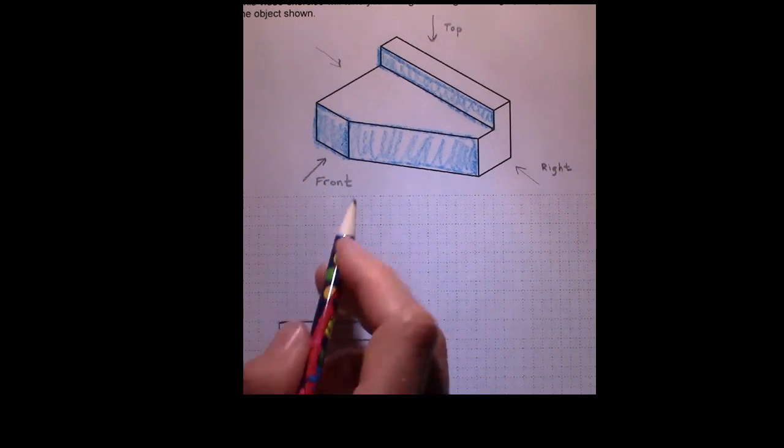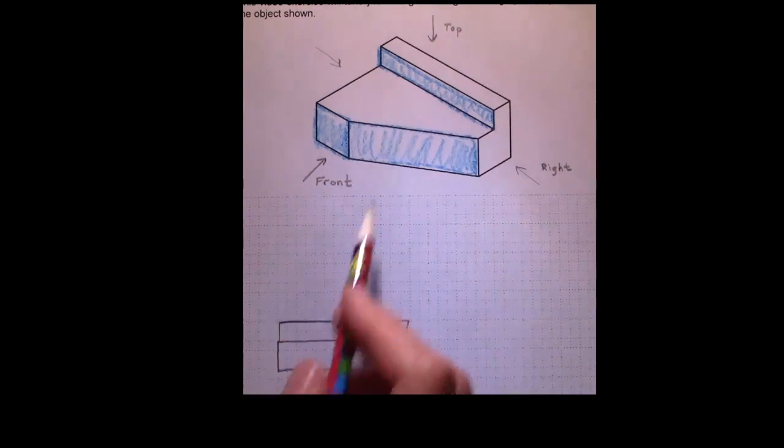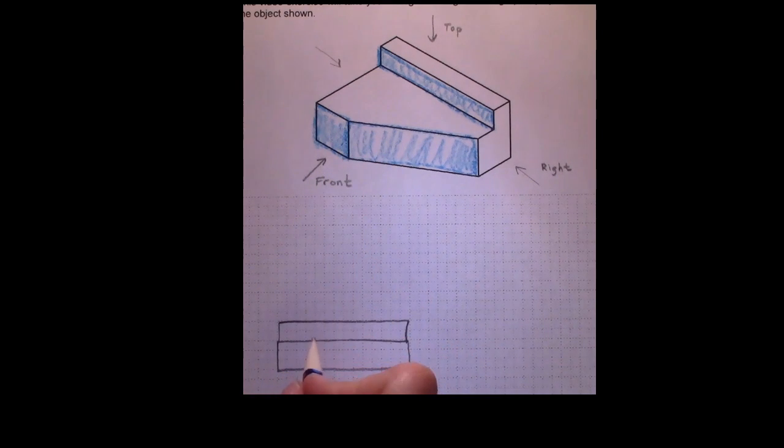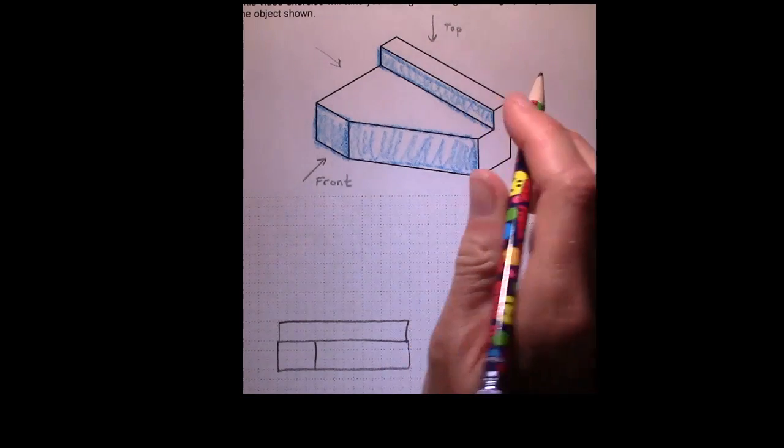You can see that we have this rectangle here on the top, this here on the bottom, but we need to indicate where that surface starts to bend. So that's our front view. You can see why this is not a terribly good front view, because it really doesn't show a lot about the object.